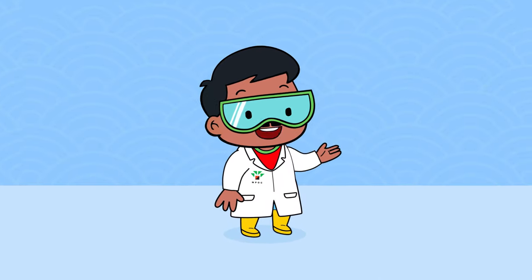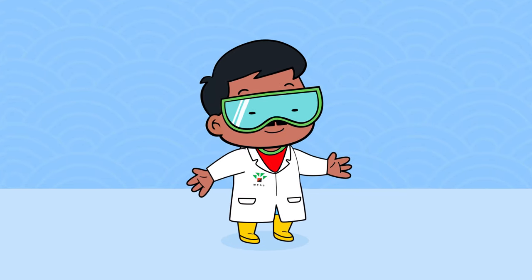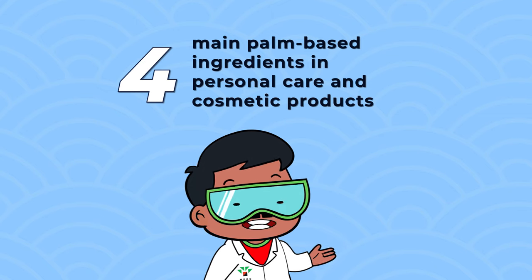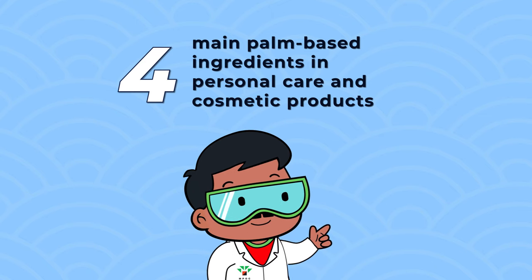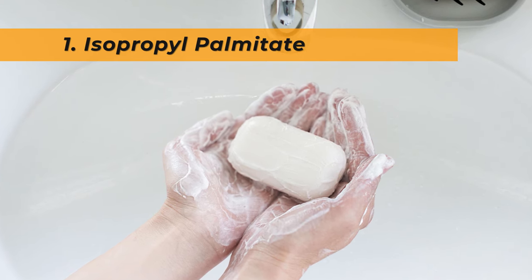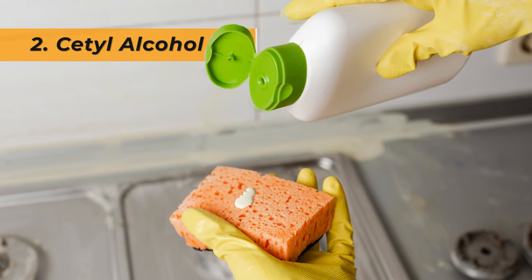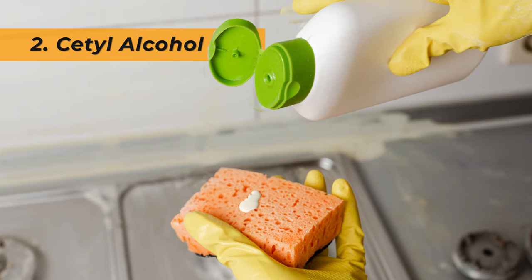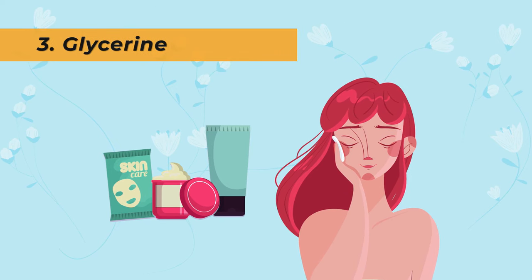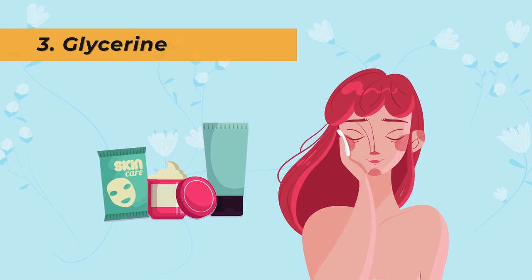Did you know that palm-based oleochemicals have properties which make them suitable for cosmetic and personal care applications? There are four main palm-based ingredients used in personal care and cosmetic products. Isopropyl palmitate is used as an emollient that imparts shine and makes the skin softer. Cetyl alcohol is mainly used as a surfactant to aid in the removal of oil and dirt. Glycerin is added as a moisturizer to improve skin softness and maintain its moisture content.